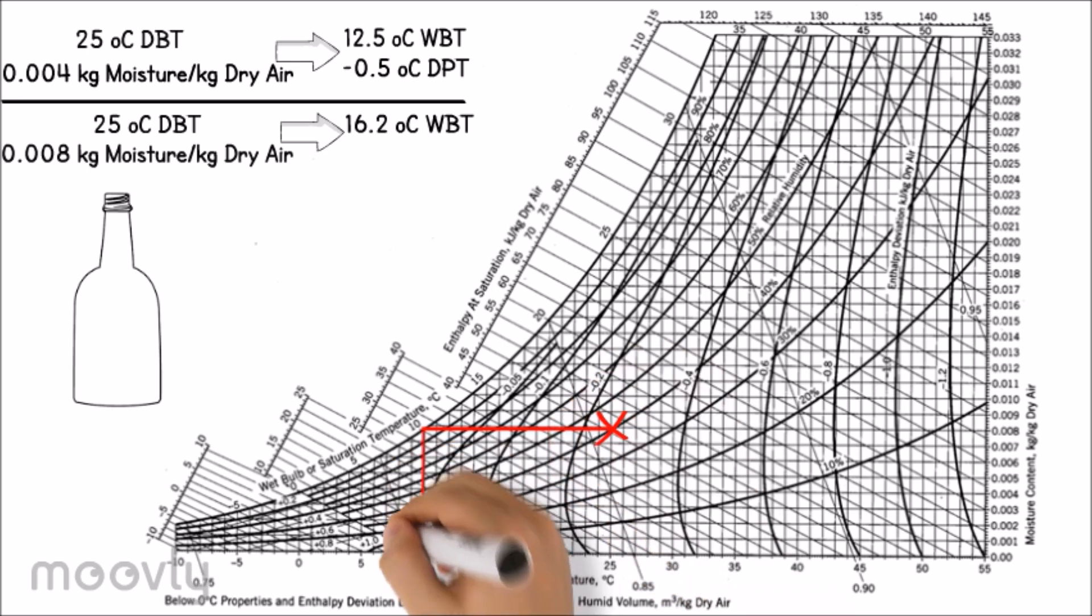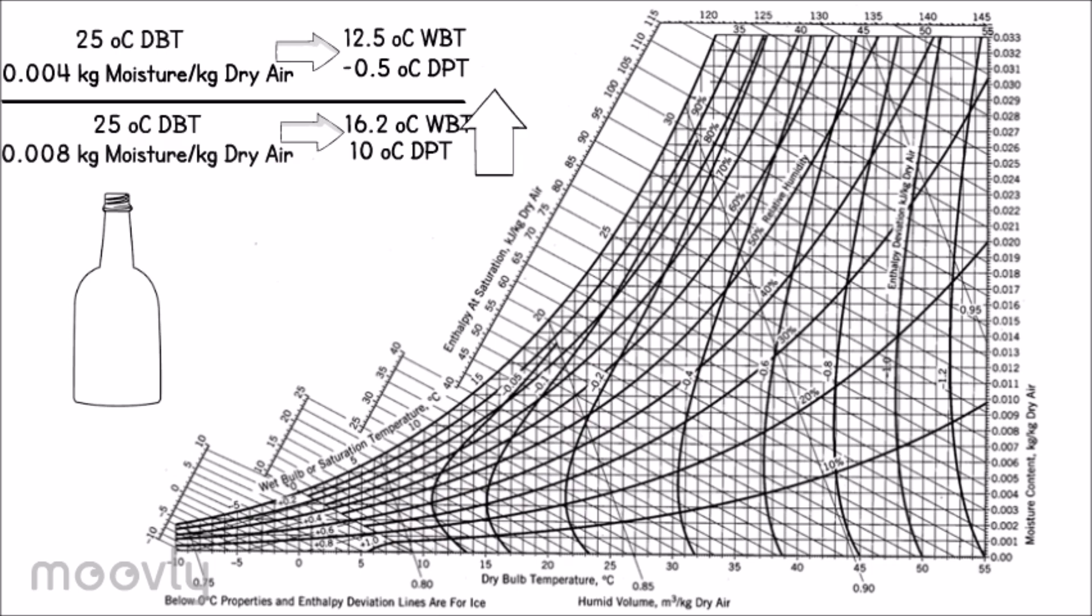While its dew point temperature is 10 degrees Celsius. The results show that there is an increment in wet bulb and dew point temperature with the increment of humidity.